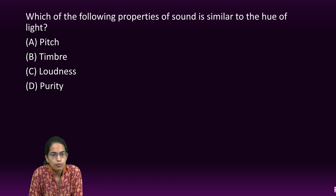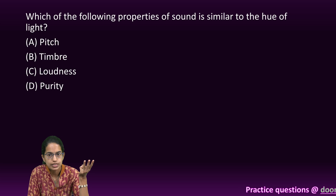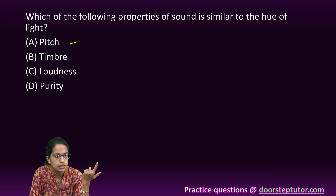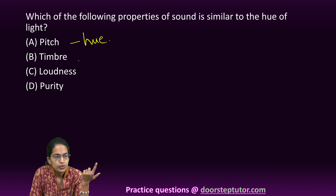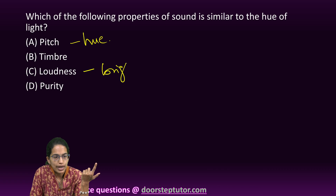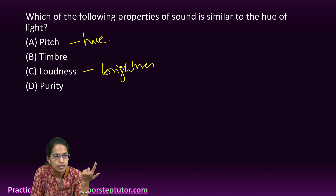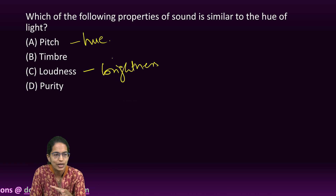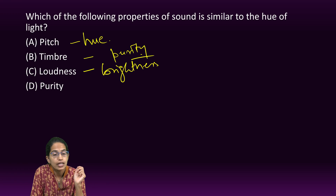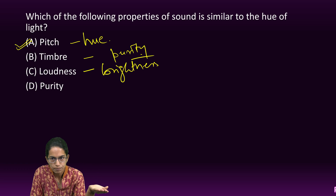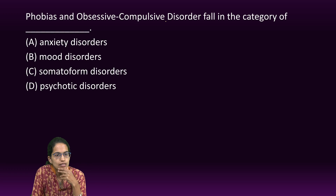The next question: which property of sound is similar to hue of light? The three properties of sound are pitch, timbre, and loudness. Pitch is similar to hue; loudness of sound is similar to brightness of light; and timbre is similar to purity of light. So the correct answer is pitch.